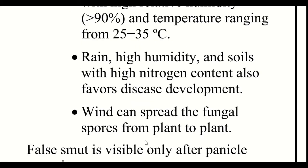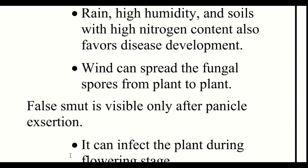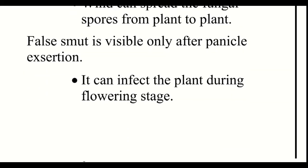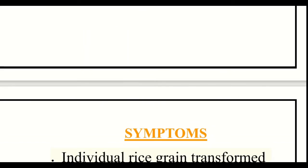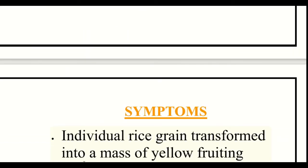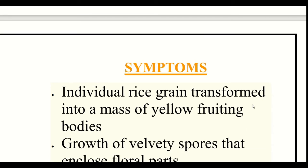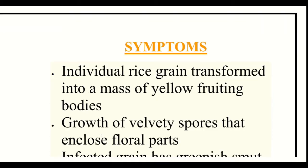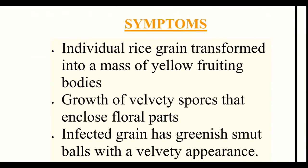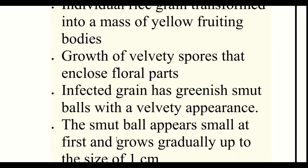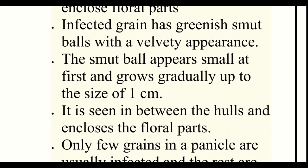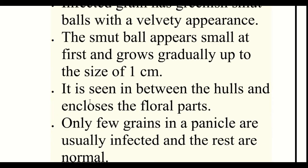Wind can spread the fungal spores from plant to plant. False Smut is visible only after panicle emergence and can affect the plant during the flowering stage. Individual rice grains are transformed into a mass of yellow fruiting bodies, with growth of velvety spores that enclose the floral parts. Infected grains have greenish smut balls with a velvety appearance, appearing small at first and growing gradually up to 1 cm in size, seen between the hulls enclosing the floral parts.